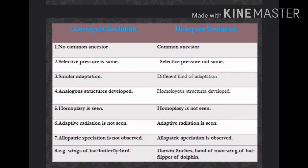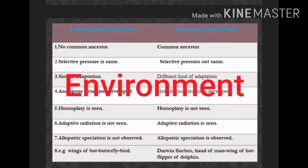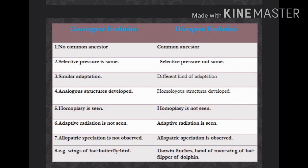Now the second point: in convergent evolution, the selective pressure — that is, the environment — is the same. But in divergent evolution, the selective pressure is not the same; the environment is different.